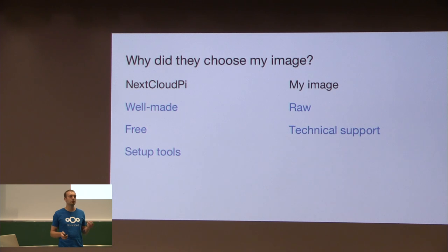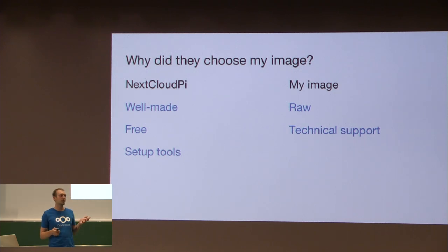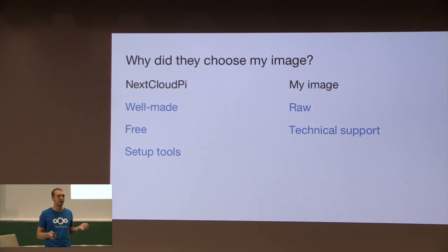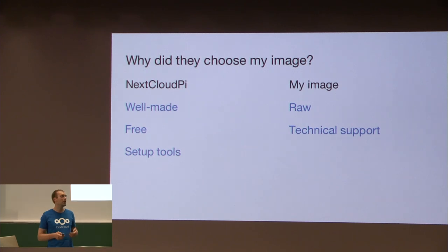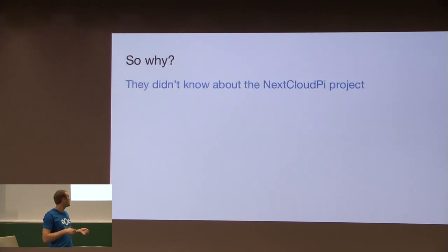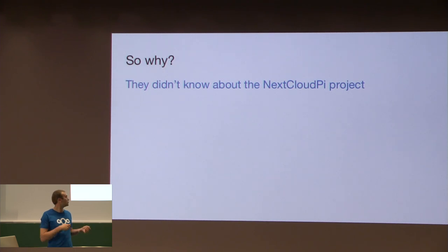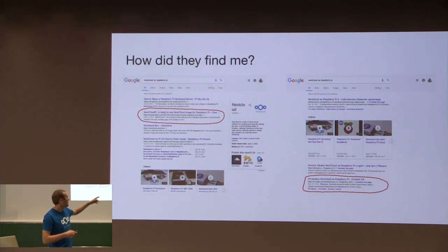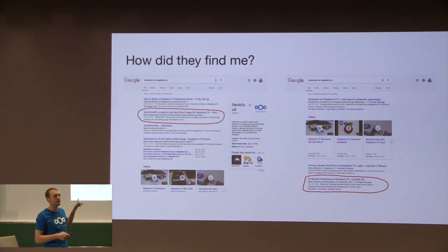I asked myself why. Why did they choose me? Why did they choose my image? Because there were some images and projects that were better. For example, NextcloudPi is well made — it's free and has a great setup wizard, and a web UI which helps people configure any setup without SSH and CLI. But for some reason they chose me. And I realized the problem is because they cannot find the NextcloudPi project on Google if they don't speak English. So if they search in their native language — for example, mine is Russian — they won't get to the right place. They get my landing page and never see the NextcloudPi project. And this is the problem because the NextcloudPi project is better.